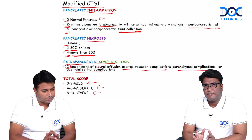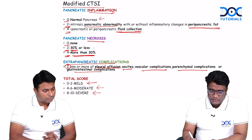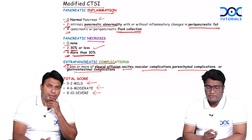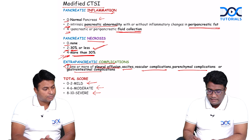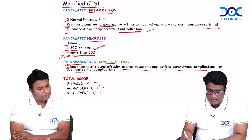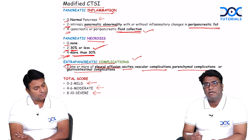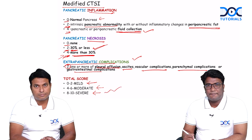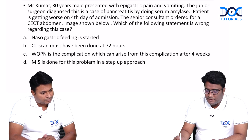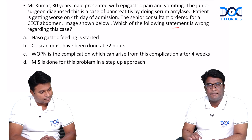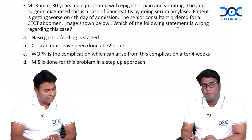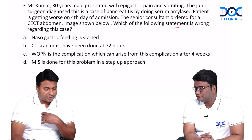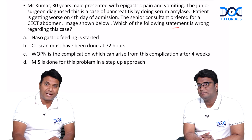In our case, we had acute necrotizing pancreatitis involving more than 30%, scoring four for necrosis. We also had pancreatic inflammation with peripancreatic fluid collections, plus extra-pancreatic complications — so we were dealing with severe pancreatitis. The question asks which statement is wrong regarding this case. I am dealing with a severe acute pancreatitis case, which has a mortality of around 30%, so I should be very serious.